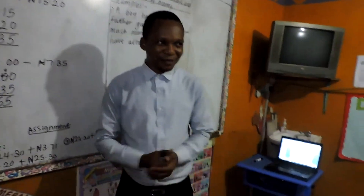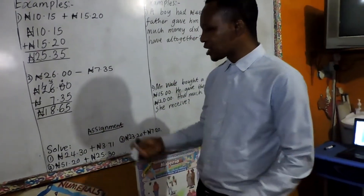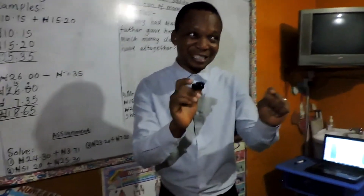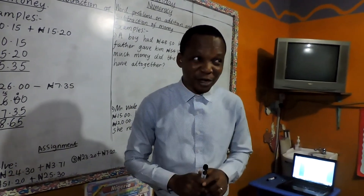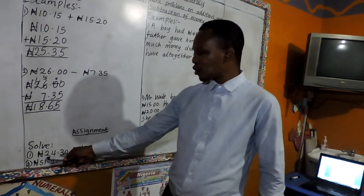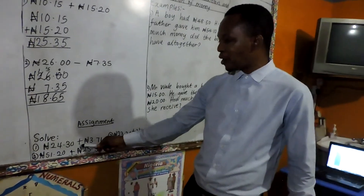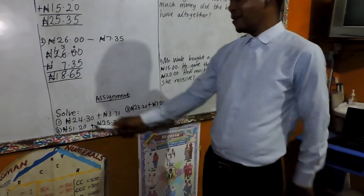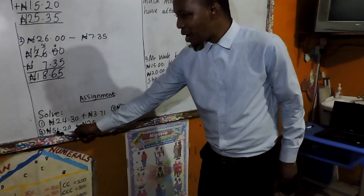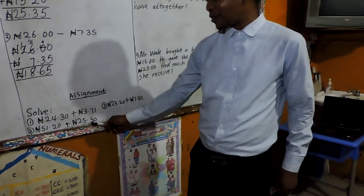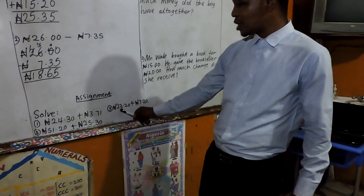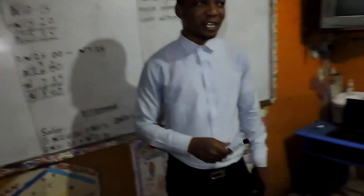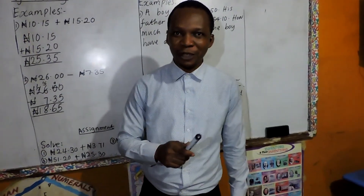Do you understand that, everybody? I know it is very simple. After I write your takeover for today — just 3 questions — take your time, do it very well. Don't say it's simple; you have to calculate it very well. The first one says: 24 naira 30 kobo plus 3 naira 71 kobo. Your arrangement is very important. Number 2: 51 naira 20 kobo plus 25 naira 30 kobo. And number 3: 23 naira 20 kobo plus 7 naira 20 kobo. Boys and girls, do that very well. I believe you and I trust you. Do have a wonderful day.